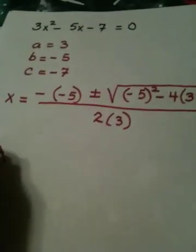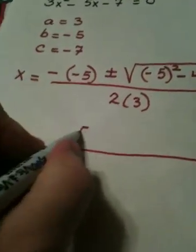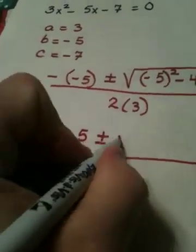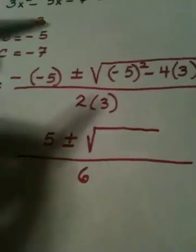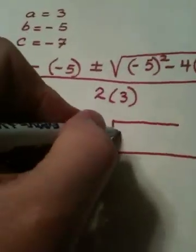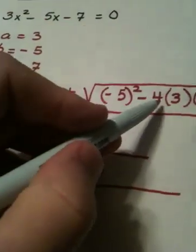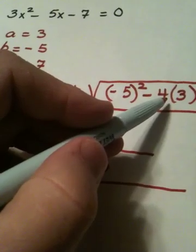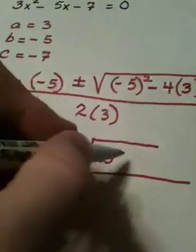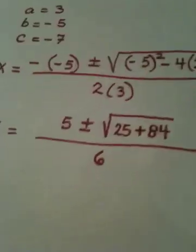Now, I evaluate. I have my division bar. This becomes a 5. Of course, on the bottom we have a 6. The hardest part is what's happening under the radical. Negative 5 squared is obviously, because negative 5 quantity squared is 25. Negative 4 times 3 is a negative 12. Negative 12 times negative 7 is a positive 84.